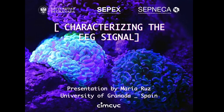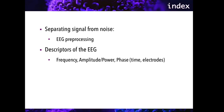Welcome everyone. In this video, we're going to talk about the main sources of variability in the EEG data, the main steps for separating signal and noise, and the core descriptors of the EEG signal. These different aspects of the EEG are the main features of information for both univariate and multivariate analysis. First, we'll go over the need to separate signals from noise in the EEG, and afterwards we'll focus on the frequency, amplitude, and phase of the oscillations that are the basis of this complex signal.